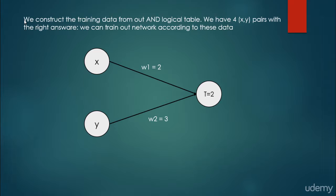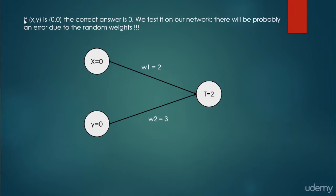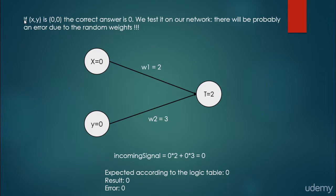For example, we have the situation when x equals 0 and y equals 0. The edge weights are w1 equals 2 and w2 equals 3 — these are the random edge weights — and the threshold is 2. The incoming signal will be 0 times 2 plus 0 times 3, which is 0, so it is less than the threshold. The expected value according to the logical table is 0, and we get 0, so the error is equal to 0. It is a good answer.